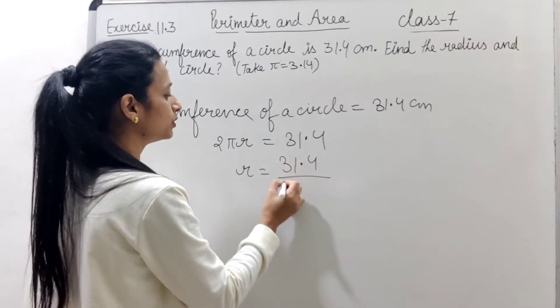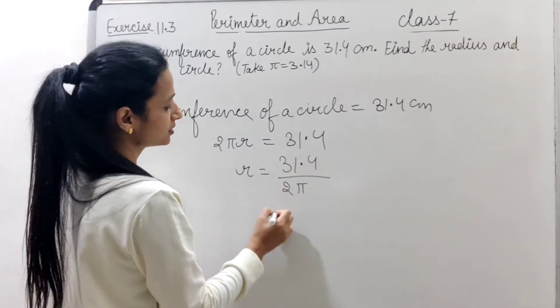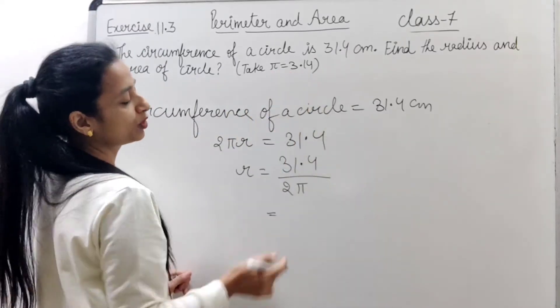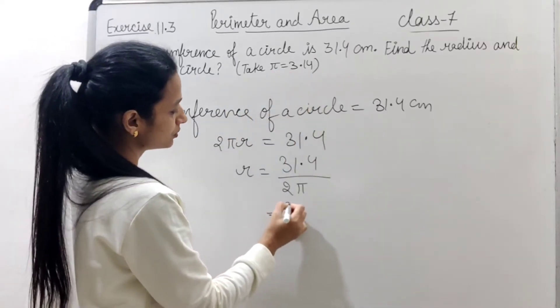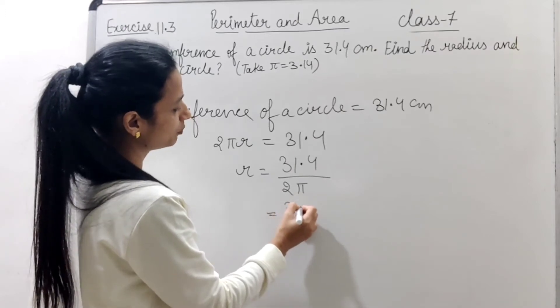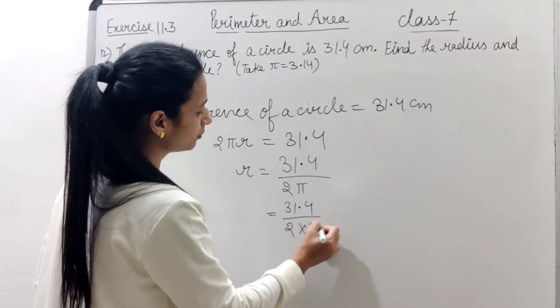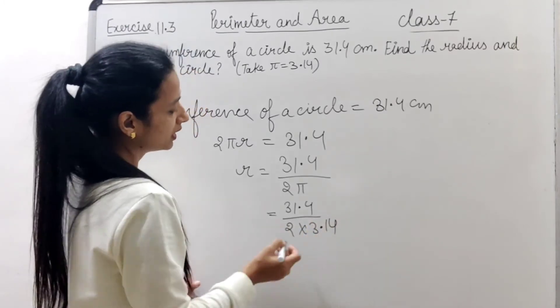So r equals 31.4 upon 2π. The value of π is given as 3.14. So we place it: 31.4 upon 2 into 3.14.